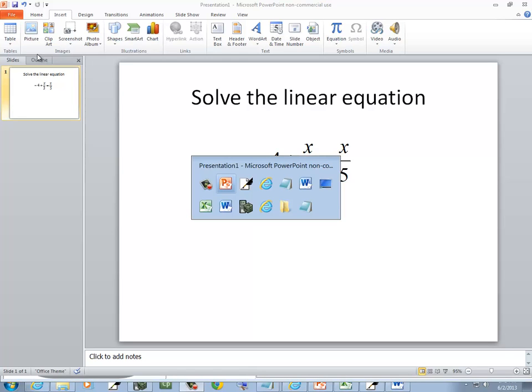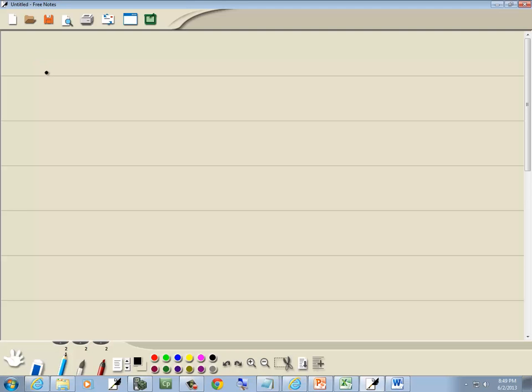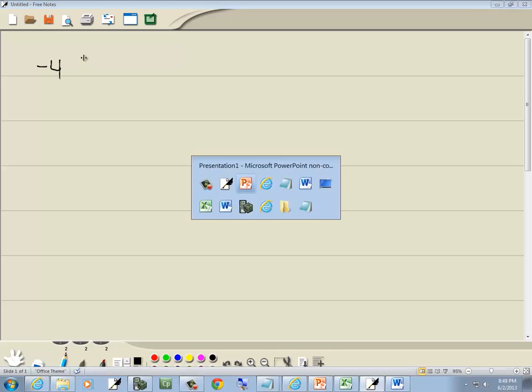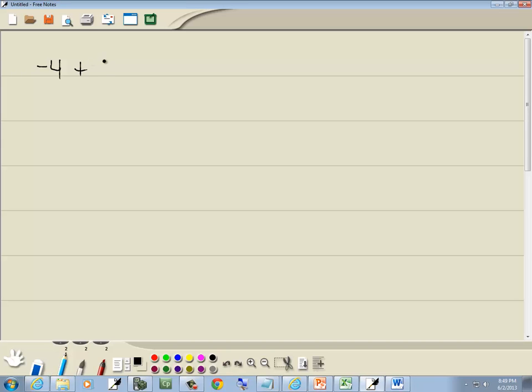Let's solve this linear equation. We've got negative 4 plus x over 3 is equal to x over 5.